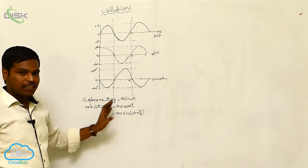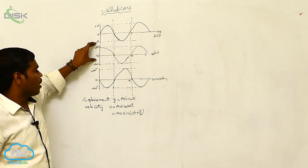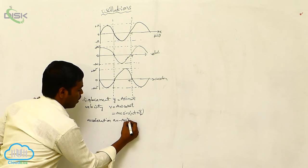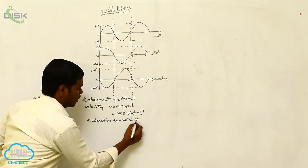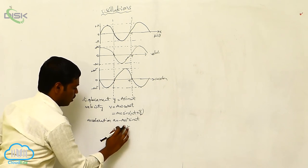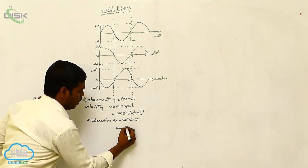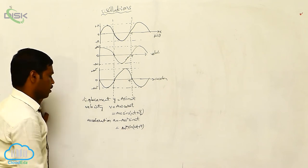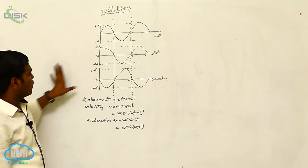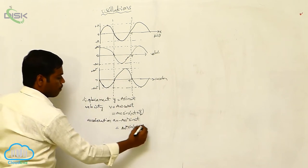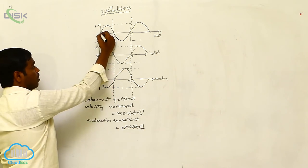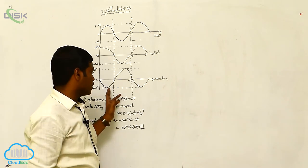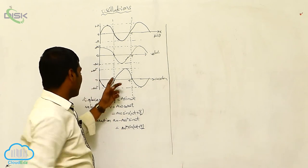Here pi/2 is the phase difference between displacement and velocity. If we take acceleration, acceleration a is equal to minus a·omega squared·sin(omega·t), which we can write as minus a·omega squared·sin(omega·t + pi). That means the displacement and acceleration have a phase difference of pi, because when displacement is maximum in the positive direction, the acceleration is maximum in the negative direction.